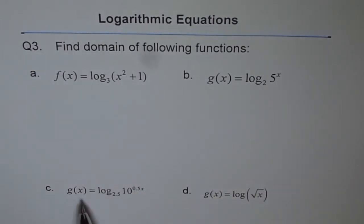c is g(x) equals log₂.₅(10^(0.5x)) and d is g(x) equals log - if nothing is given in the base, it is assumed to be 10 - log₁₀(√x).